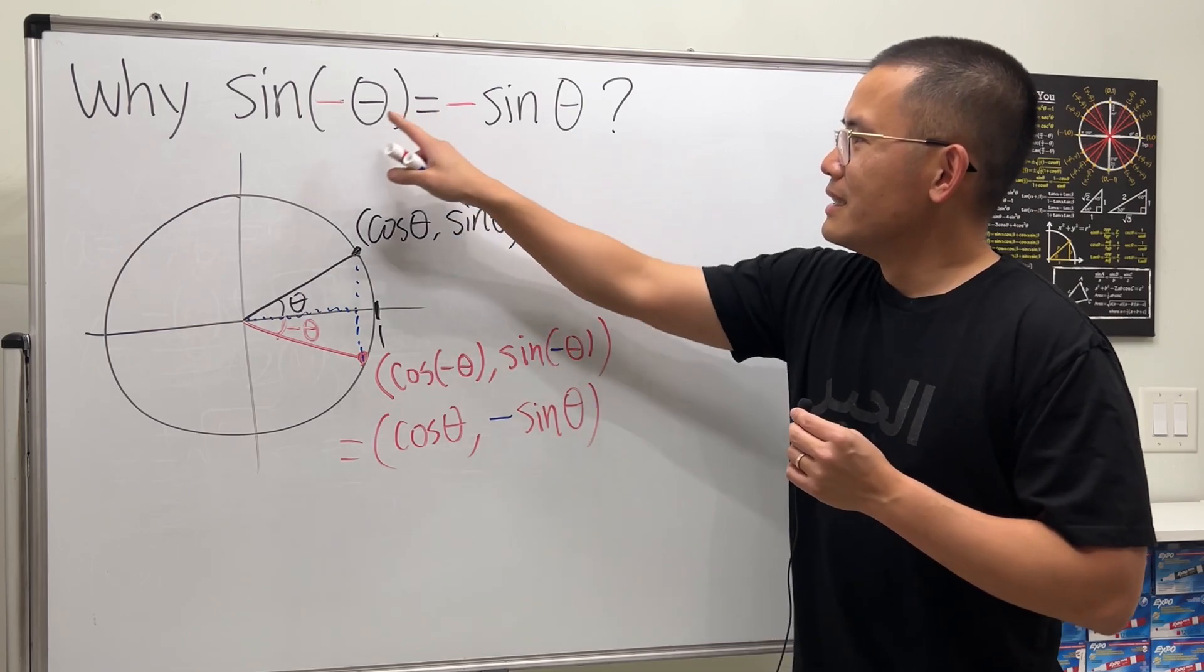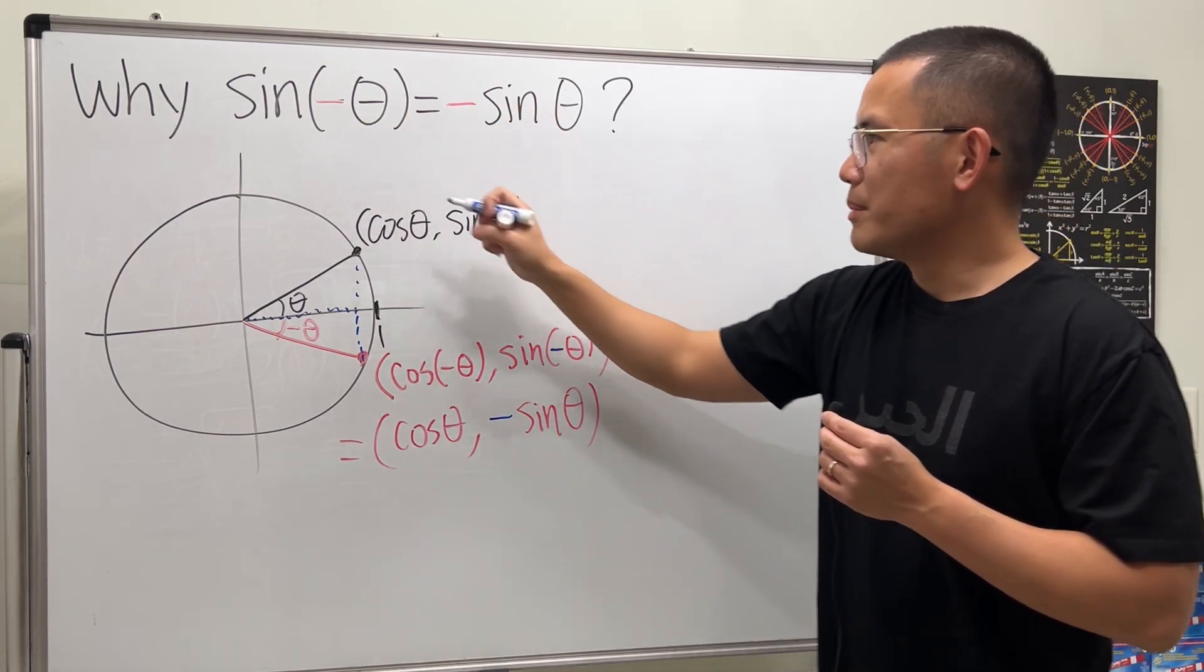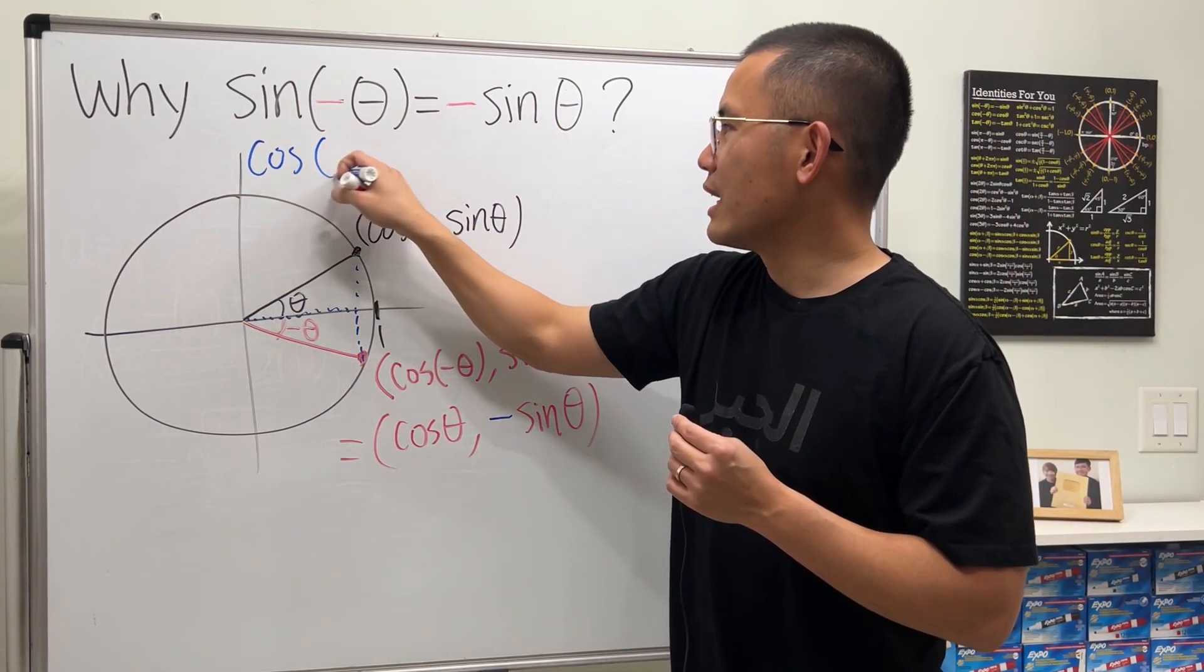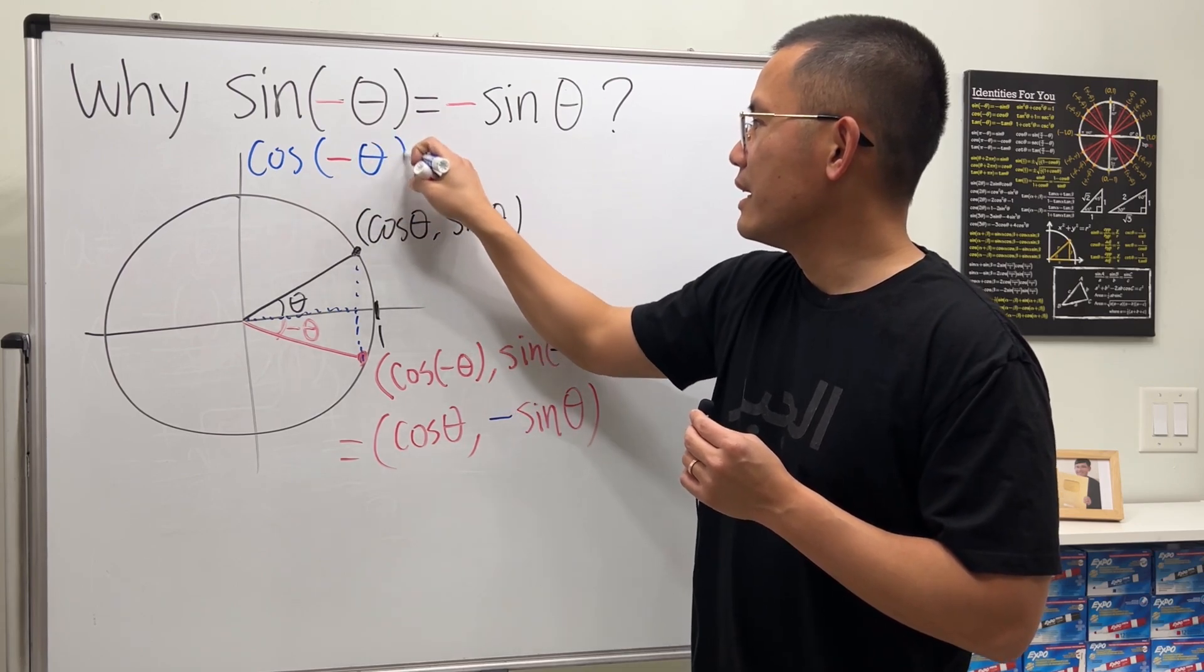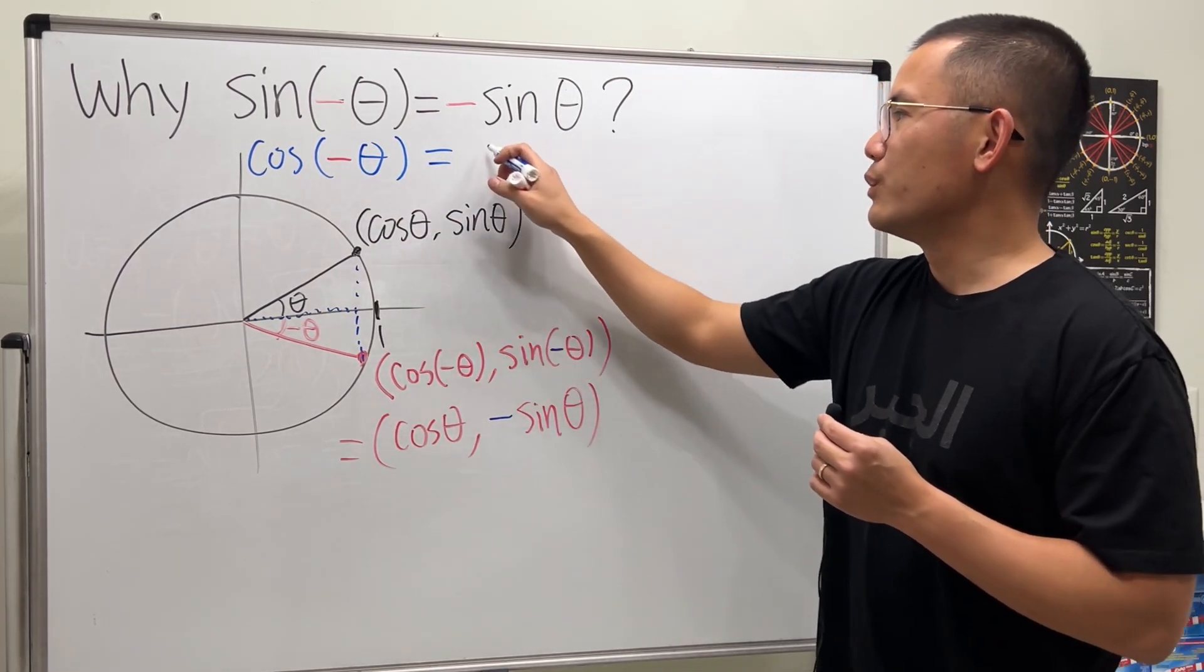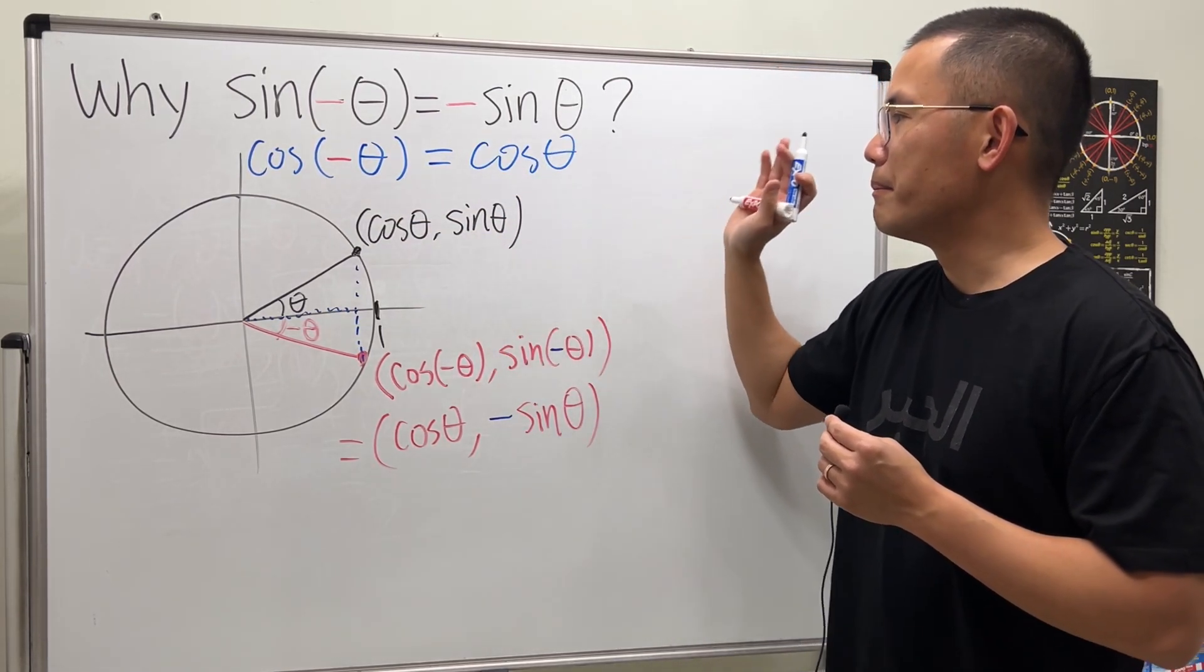So as you can see, sine of negative theta is this. And in the meantime, I can also tell you cosine of negative theta. In fact, the negative doesn't matter. We just get cosine of theta back.